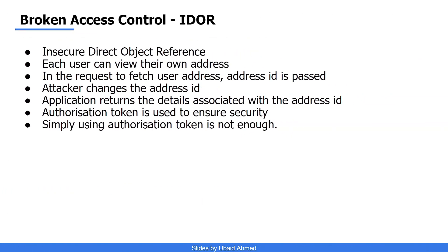Moving on to another type of vulnerability under broken access control: IDOR, or Insecure Direct Object Reference. It is a type of access control vulnerability that arises when an application uses user-supplied input to access objects directly. For example, a request to fetch a user address using an address ID — that address ID is the identifier and the address is our object. Similarly, user profiles are objects and profile IDs are their identifiers. If a user provides a profile ID and the application fulfills the request without validating whether that user is allowed to view that profile, it is a case of IDOR.